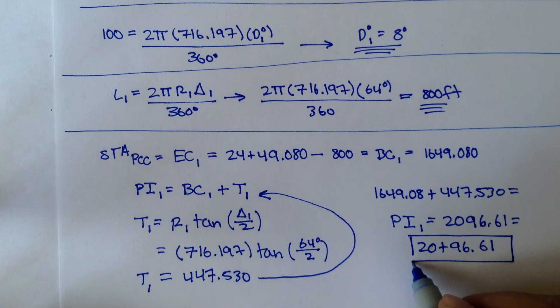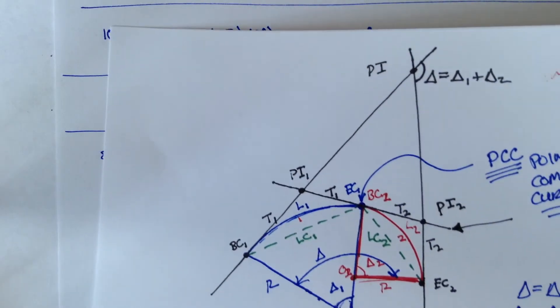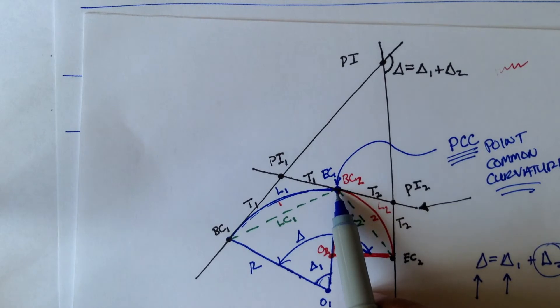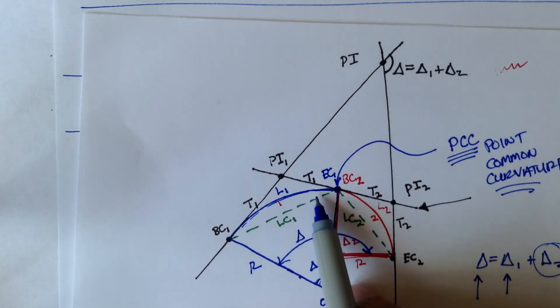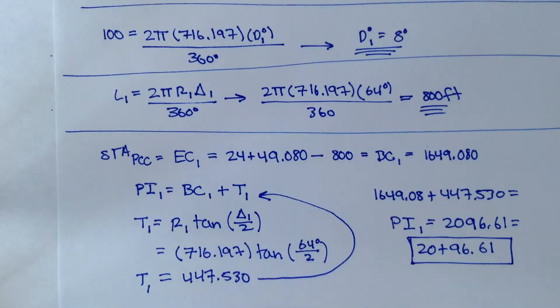So that is the station for point of intersection for 1. And remember, on the diagram, that's this point. So we took the station for the point of common curvature, which is also the station for the EC of curve 1. We subtracted L, added T to get PI1.